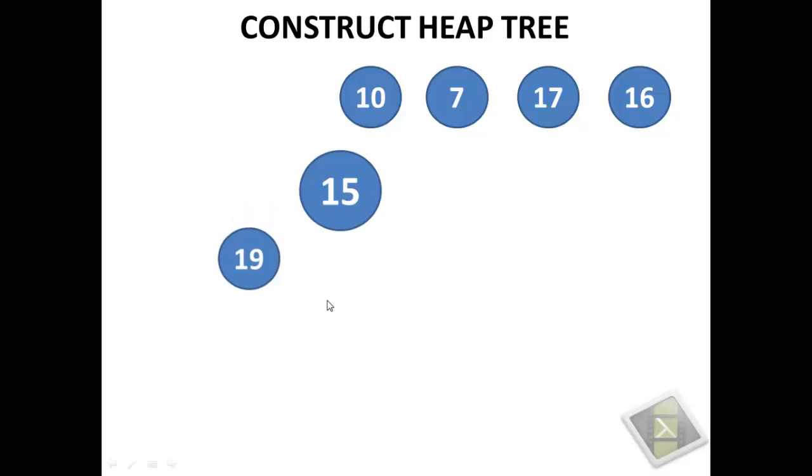Now, you can notice here that 19 is greater than 15. So we will adjust the constructed tree to satisfy the max heap property. What we will do is interchange the positions.